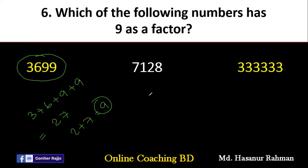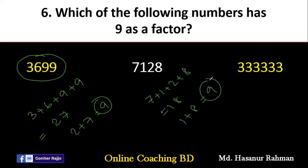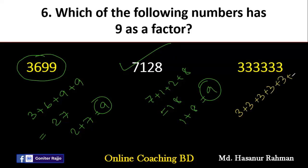Now what about 7128? Add 7 plus 1 plus 2 plus 8. 8 plus 2 is 10, 10 plus 1 is 11, 11 plus 7 is 18. Adding 1 plus 8 gives 9. 9 is also divisible by 9. So 7128 is also divisible by 9. Now our last problem: 3 plus 3 plus 3 plus 3 plus 3 plus 3 plus 3. Adding these gives 18. 18 is divisible by 9, so this number is also divisible by 9.